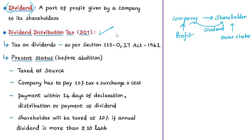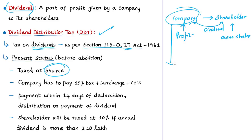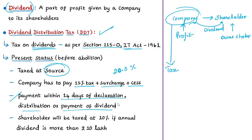The dividend distribution tax (DDT) is the tax levied on dividends paid by a company to its shareholders, mentioned under Section 115 of the Income Tax Act of 1961. Currently, DDT is taxed at source — the company distributing the dividend is taxed at a rate of 15% plus surcharge and cess on the gross amount, making the overall tax around 20.3%. Companies had to pay DDT within 14 days of declaration, distribution, or payment of dividend, whichever is earliest.